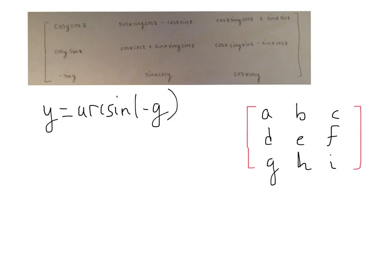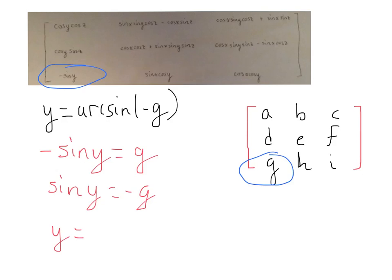Now, you may already see where this comes from, but this is just some simple algebra. Notice, we're only looking right now at this number and this number. So according to this matrix up top, the negative sine of y is equal, actually, to g. So, we can solve this equation for y just by multiplying both sides by negative one, leaving us with sine of y is equal to negative g. And then, taking the arc sine of both sides, we'll eliminate the sine, and we're left with y is equal to the arc sine of negative g. So, that's where that comes from.